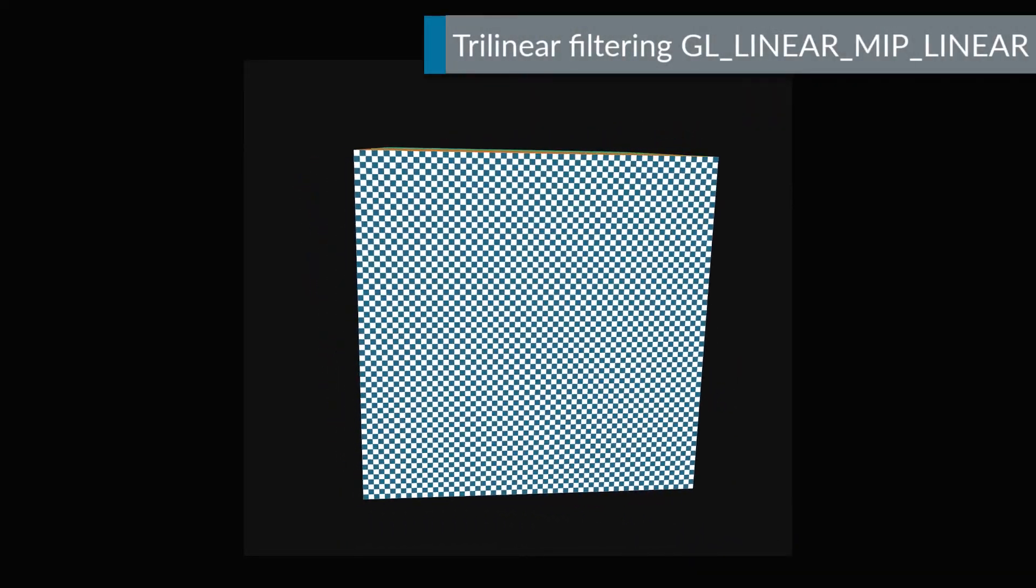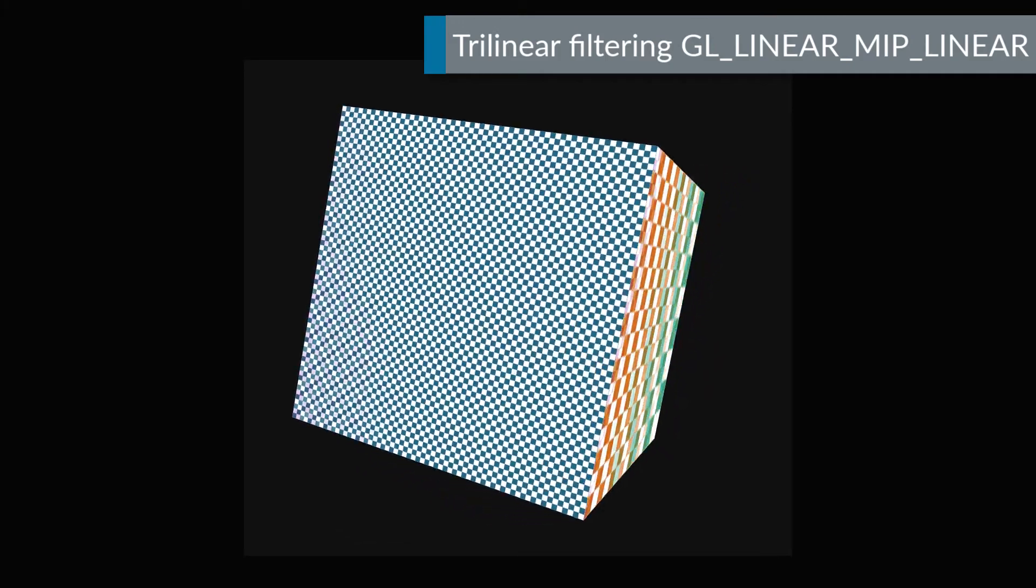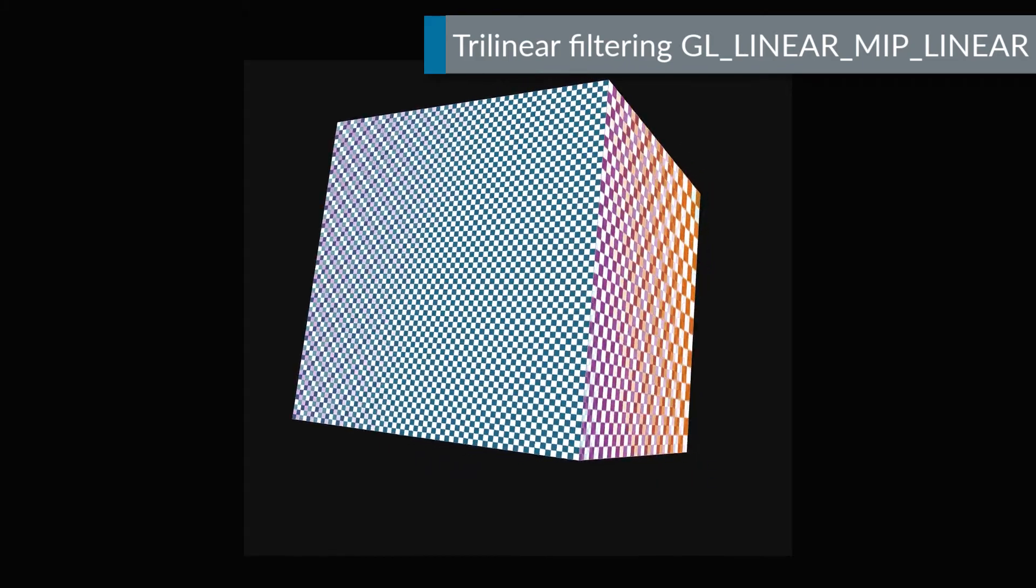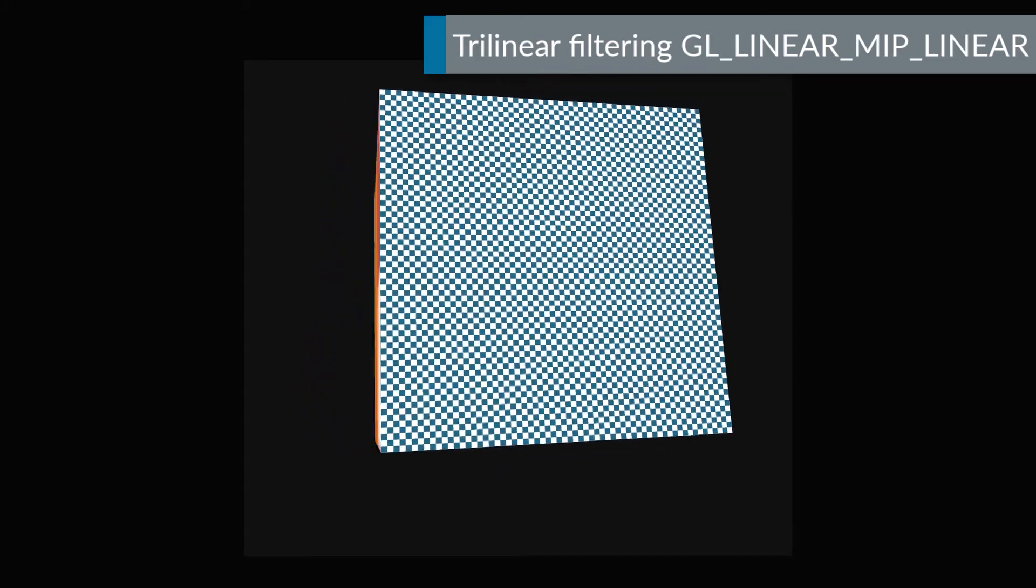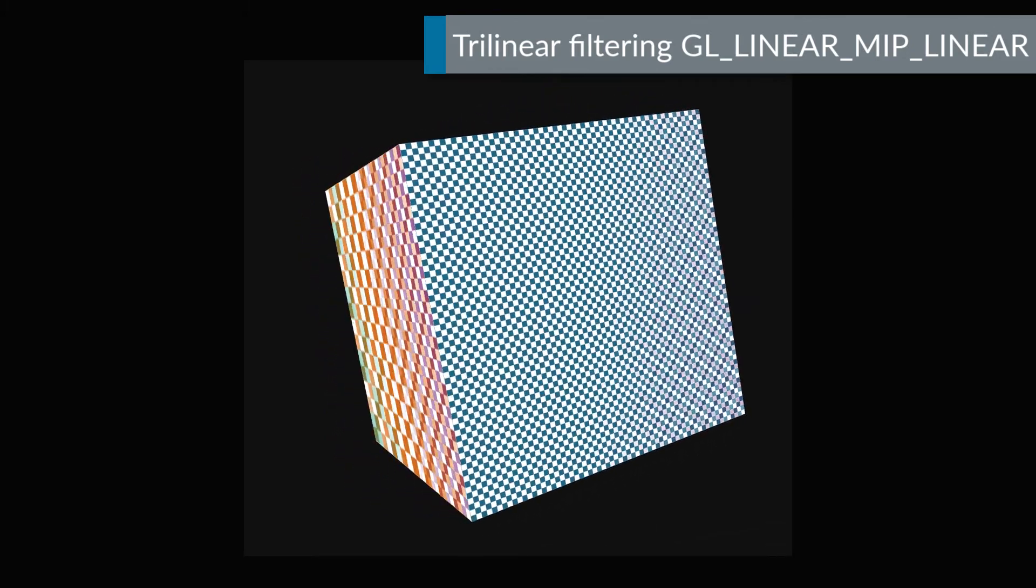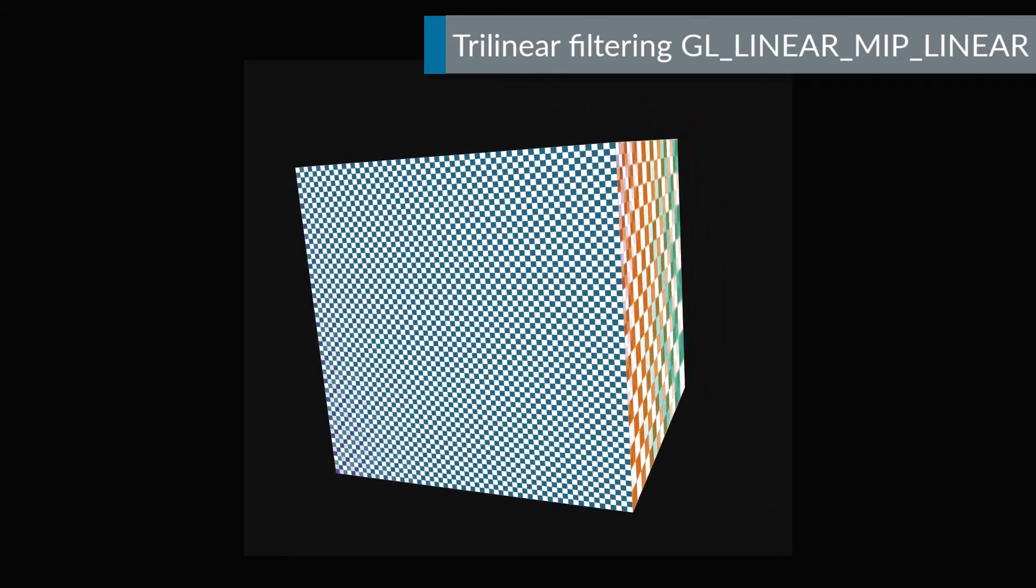The next level of filter used is a trilinear filter, or the GL_LINEAR_MIP_LINEAR filter in OpenGL ES. Each sample makes two bilinear samples from the two nearest MIP map levels and then blends those together. This runs at half the speed of a basic bilinear filter and may require up to five times the bandwidth for some samples as they fetch data from a more detailed MIP map.